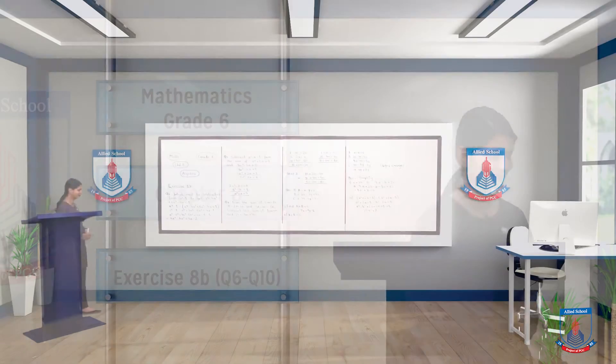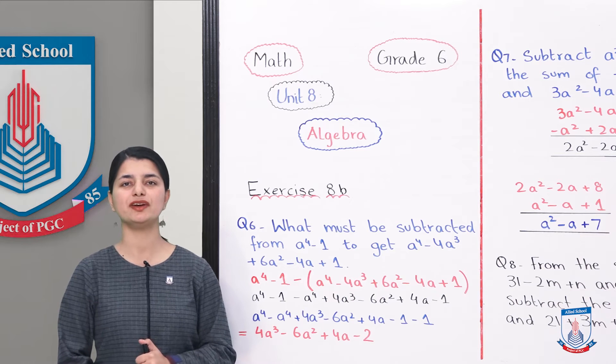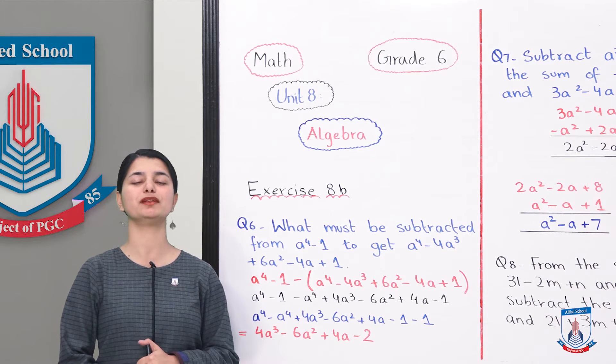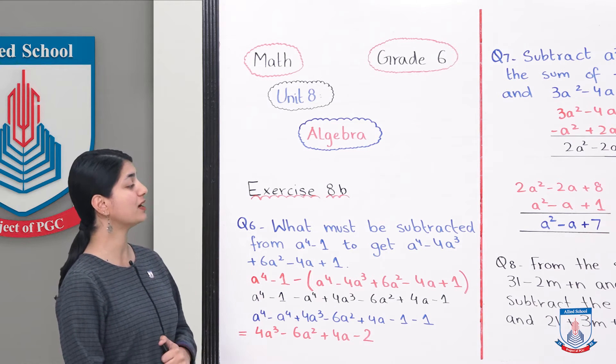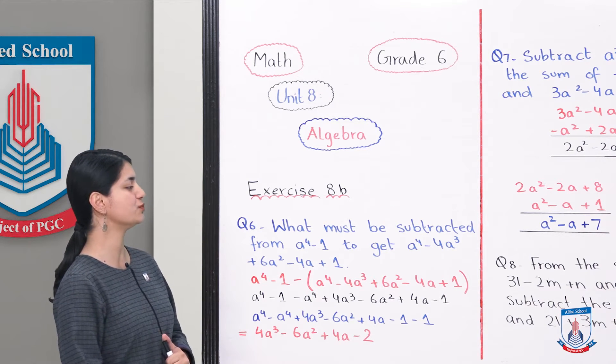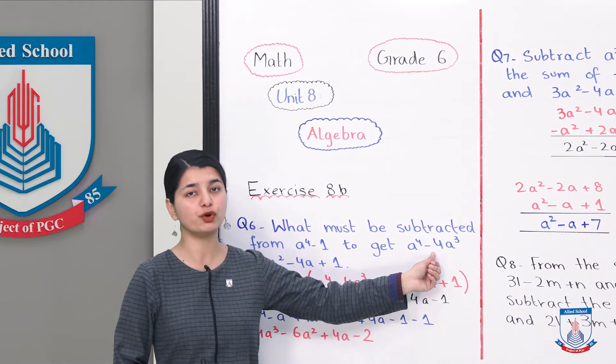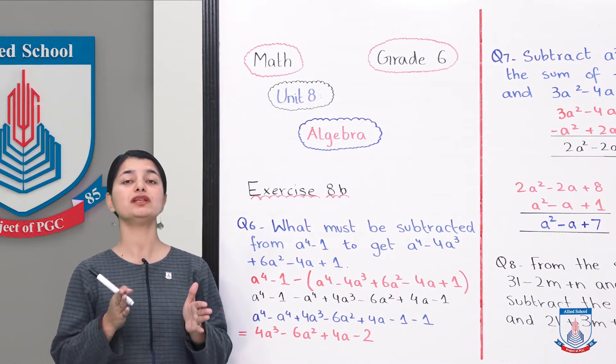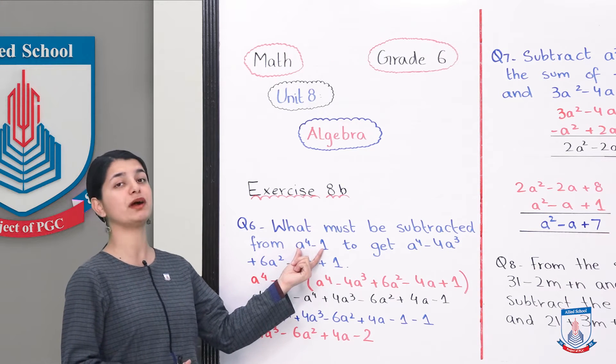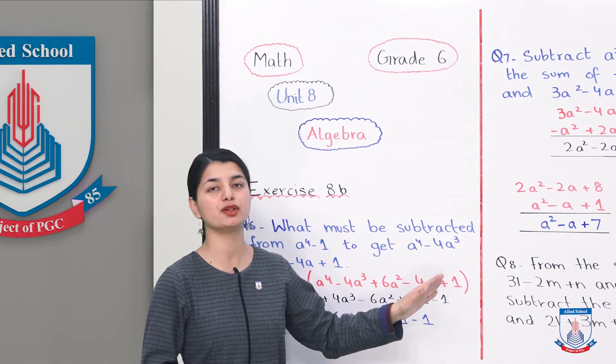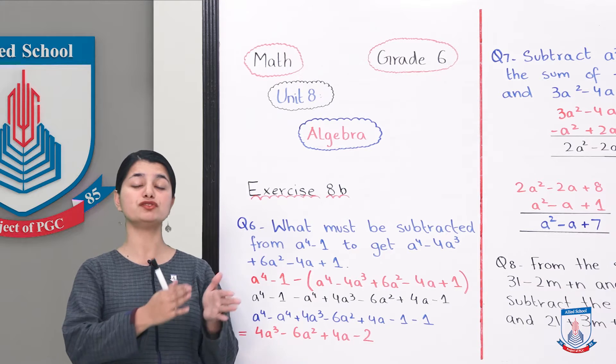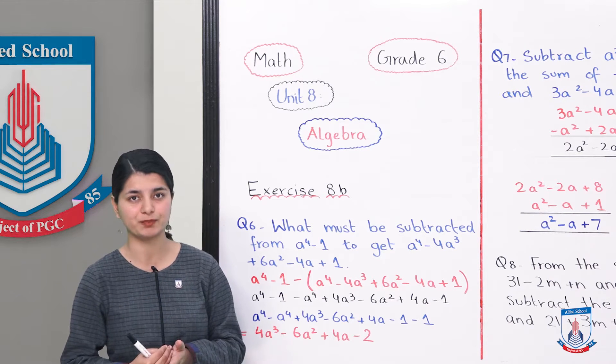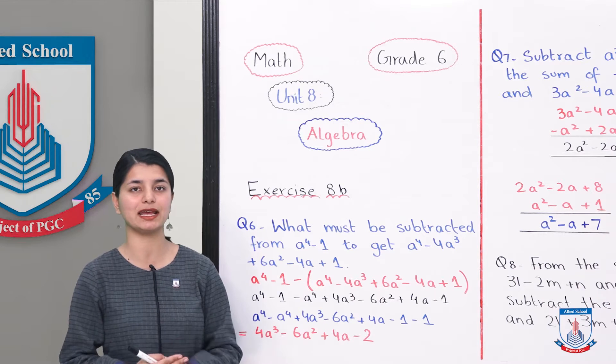We have already completed the first 5 questions of Exercise 8B. We will start from question number 6 and we will go up to question number 10. Question number 6 is: what must be subtracted from A^4 minus 1 to get the answer A^4 minus 4A^3 plus 6A^2 minus 4A plus 1? They have given you this long expression and they have said A^4 minus 1, what will subtract to get this answer. When you subtract something from another, you simply put A^4 minus 1 minus the entire expression which they have given.